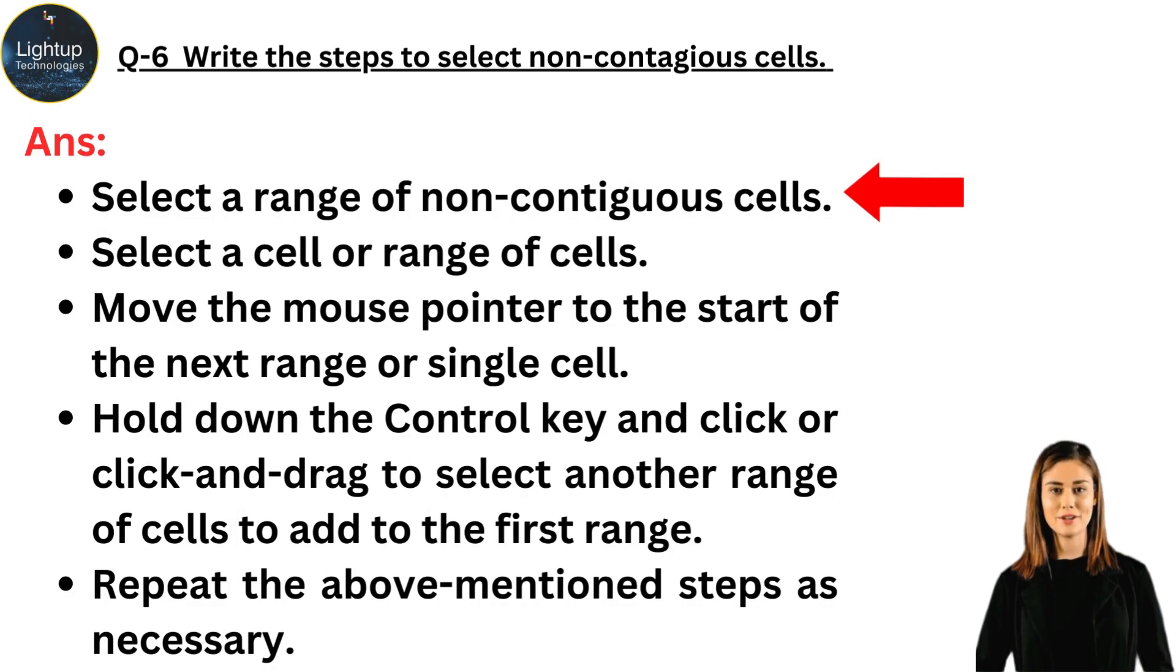Write the steps to select non-contiguous cells. Select a range of non-contiguous cells. Select a cell or range of cells. Move the mouse pointer to the start of the next range or single cell. Hold down the control key and click or click and drag to select another range of cells to add to the first range. Repeat the above mentioned steps as necessary.